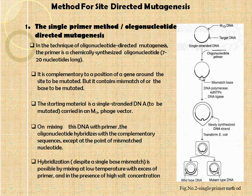The first method for site-directed mutagenesis is the single primer method. In this method, the primer is a chemically synthesized oligonucleotide 7 to 20 nucleotides long. It is complementary to the position of the gene around the site to be mutated, but it contains a mismatch of one or more bases to be mutated. The starting material is single-stranded DNA carried in an M13 phage vector.